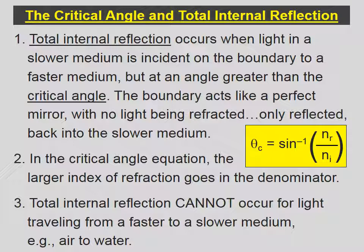Let's review. Total internal reflection occurs when light in a slower medium is incident on the boundary to a faster medium at an angle greater than the critical angle. The boundary acts like a perfect mirror, with no light being refracted — only reflected back into the slower medium. In the critical angle equation, the larger index of refraction goes in the denominator. Finally, total internal reflection cannot occur for light traveling from a faster to a slower medium, such as air to water; it only works when light in a slower medium is trying to escape into a faster medium.